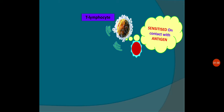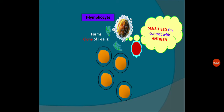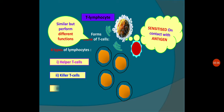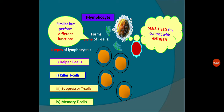When sensitized T-lymphocytes come in contact with the antigen, they are going to form a clone of T-cells — an exact copy of the T-cells. They are similar in structure but perform different functions. There are four types of lymphocytes produced by T-lymphocytes after getting sensitized by the antigen: the first is helper T-cell, second is killer T-cell, third is suppressor T-cell, and the fourth is memory T-cell.